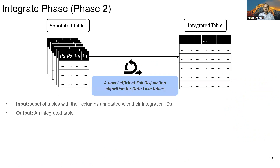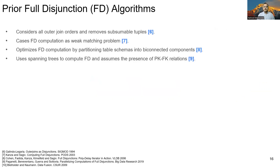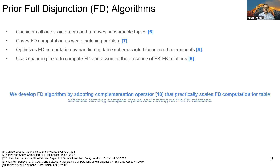Once the Align phase gives us the tables with columns annotated with their dummy column headers, we apply our novel full disjunction algorithm over the dummy column headers to get an integrated table as output in the Integrate phase. Full disjunction has been used to integrate relational tables in the past. Prior work computes full disjunction using different concepts such as computing outer join for all possible orderings of table schemas and removing subsumed tuples, or reducing FD computation as a weak matching problem. More recent works compute FD by partitioning table schemas into bi-connected components, or by applying outer join over all spanning trees that can be generated from the input schemas. In this work, we propose a new way of computing full disjunction by adopting a complementation operator so that it practically scales FD computation for table schemas forming complex cycles and having no primary key to foreign key relations, as in prior work.